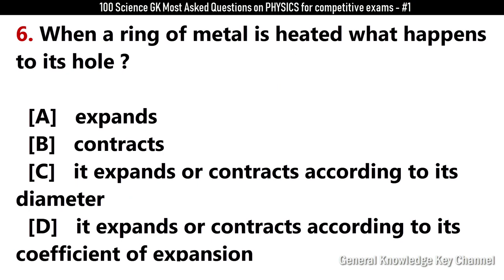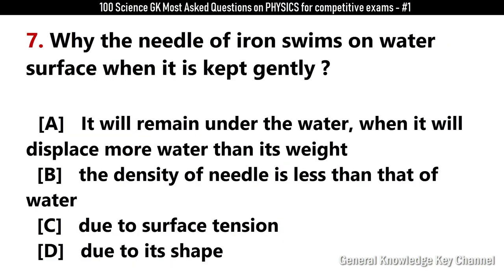When a ring of metal is heated, what happens to its hole? Answer A: It expands. Why does the needle of iron swim on the water surface when it is kept gently? Answer C: Due to surface tension.